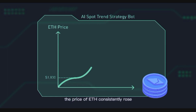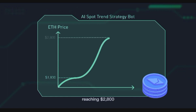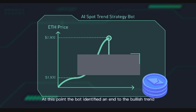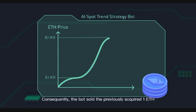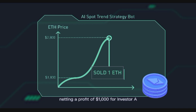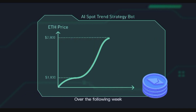In the subsequent days, the price of ETH consistently rose, reaching two thousand eight hundred dollars. At this point, the bot identified an end to the bullish trend as the fast line was about to cross below the slow line. Consequently, the bot sold the previously acquired one ETH, netting a profit of one thousand dollars for Investor A.